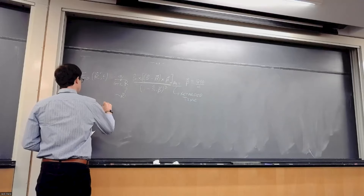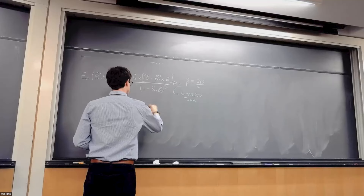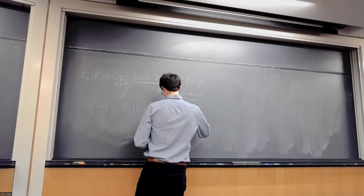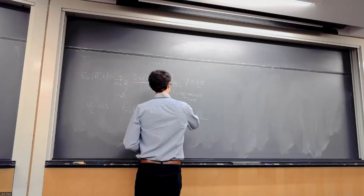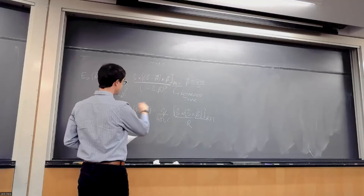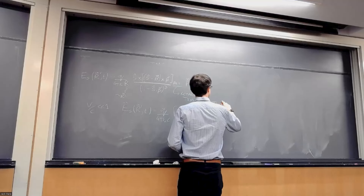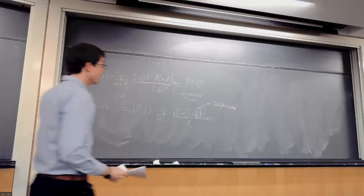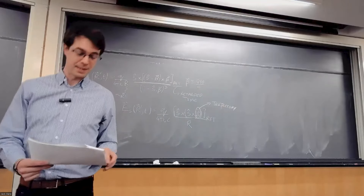Taking the non-relativistic approximation where v/c ≪ 1, we end up with a formula for the scattered radiation: E_s at R prime at time t equals q / (4πε₀ · m · c²) times [s-hat × (s-hat × β-dot)] over R, where the numerator is evaluated at the retarded time. The key thing is that to get the scattered electric field, we need to know β-dot — the particle's acceleration — and that's where we go back to work out how the particle oscillates in the electric field.